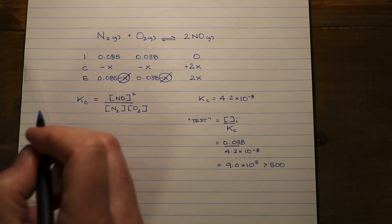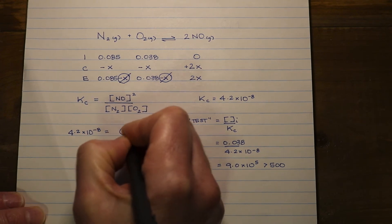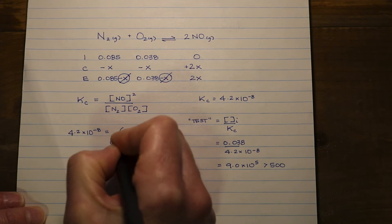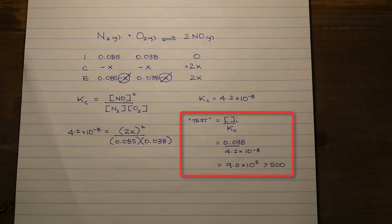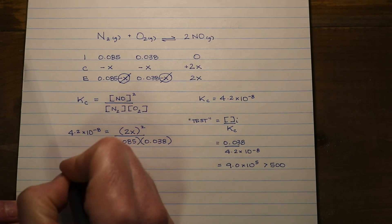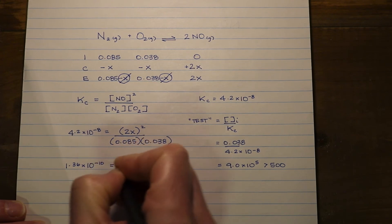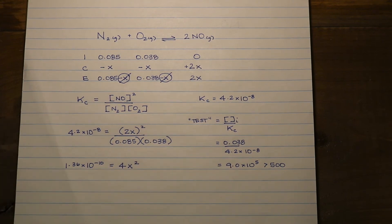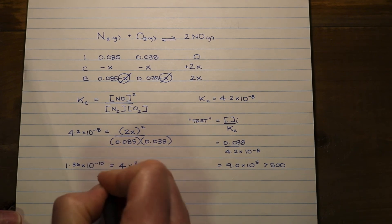Now we're going to look at our Kc expression and exclude the X to make our calculations easier. I'm going to put in the values: Kc is 4.2 times 10 to the negative 8, and the values from the E part of the ICE table, excluding the X because of the approximation method. I can now expand and simplify and solve for X. I'm going to multiply by my Kc and expand the brackets to get 4X squared. Then I'm going to divide 1.36 times 10 to the negative 10 by 4 to solve for X squared.